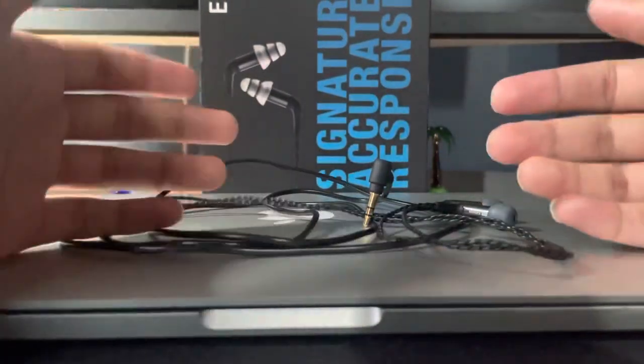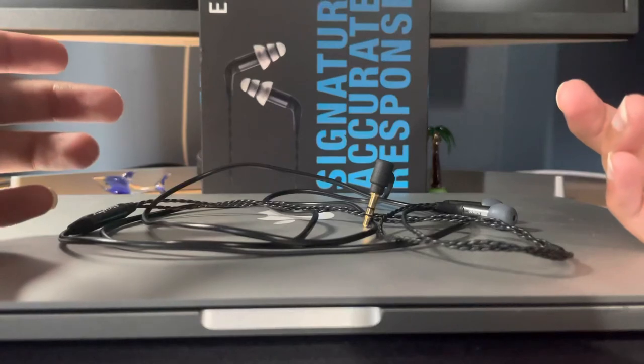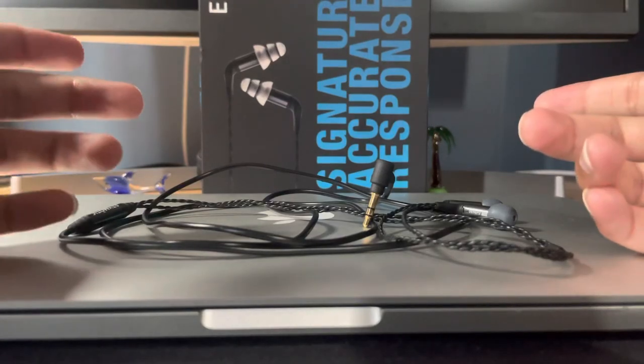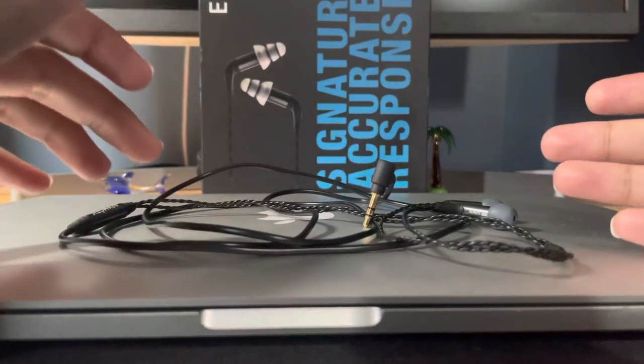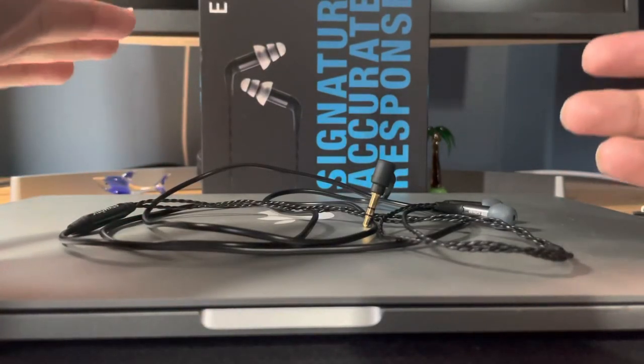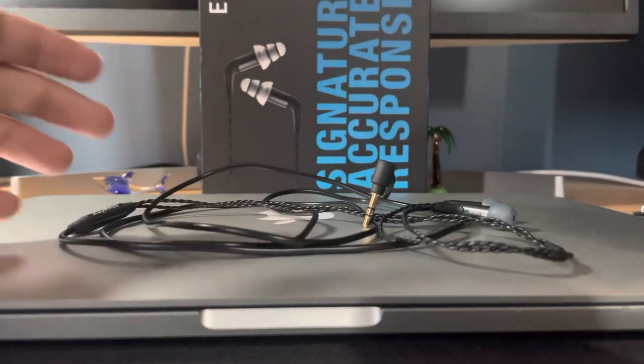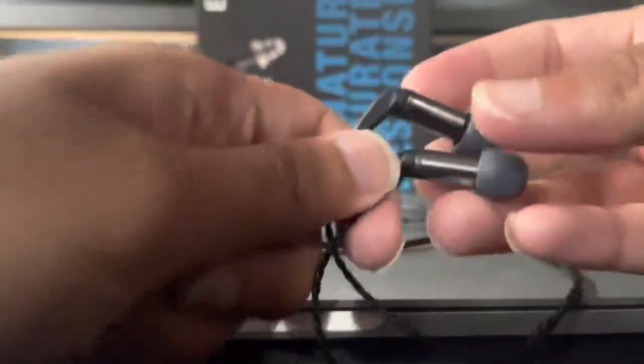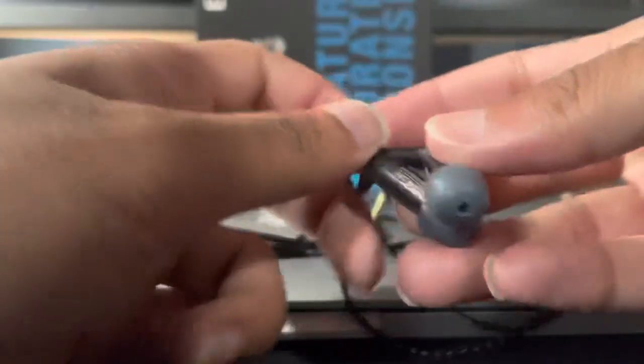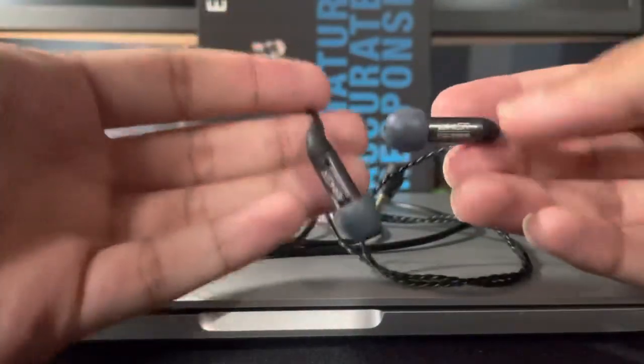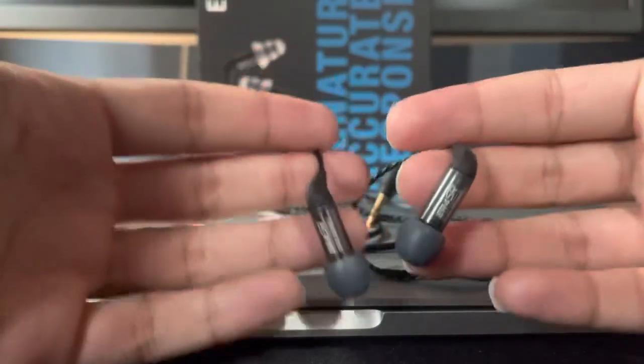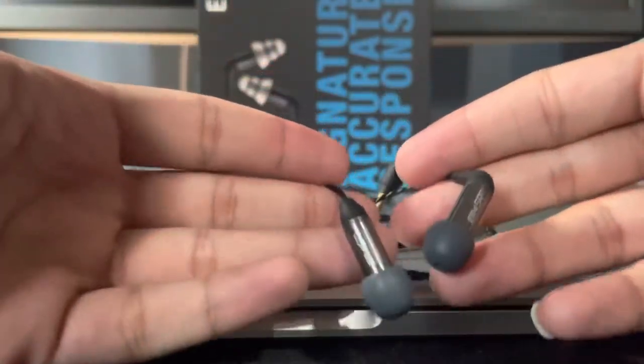Well, basically, the sound signature of this earphone, I would say, is a signature accurate response. Like, there's no coloration in your music. There's nothing. Like, you just hear the music like it was recorded, I guess. I would say the treble is better than the Shure SE-846s. It's just more refined. But, I don't know. Like, I'm shocked at how these compete with the Shure SE-846s in that range.